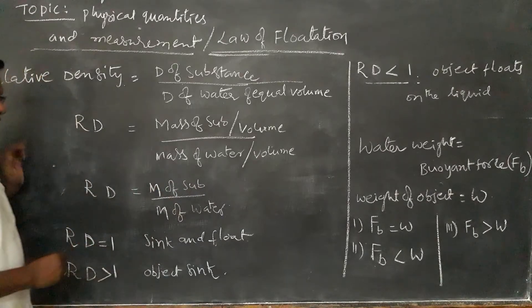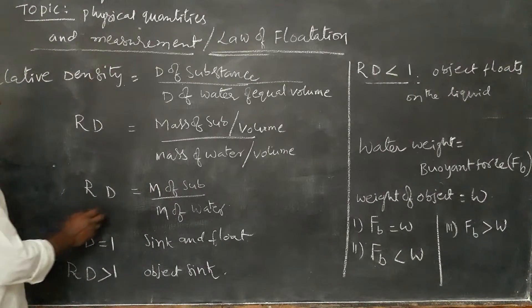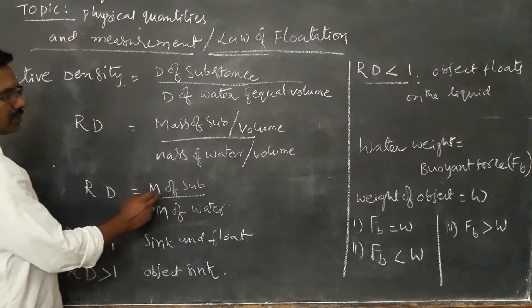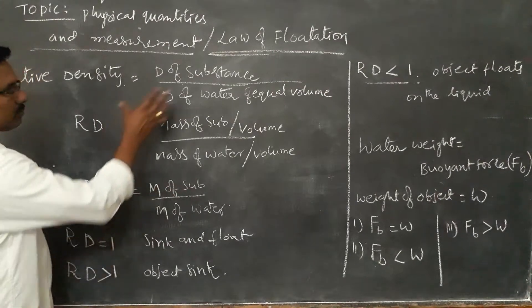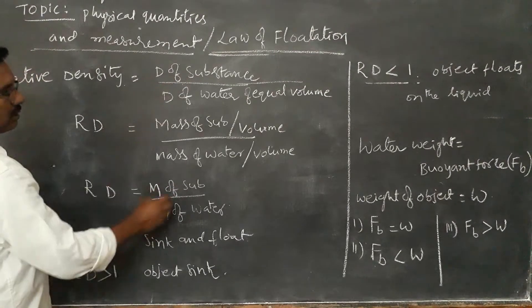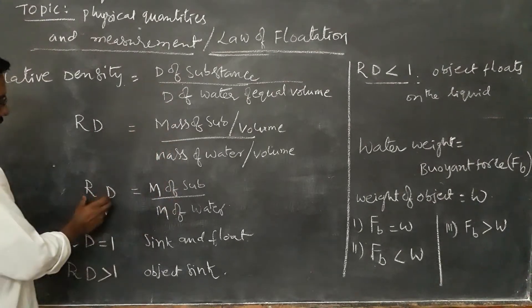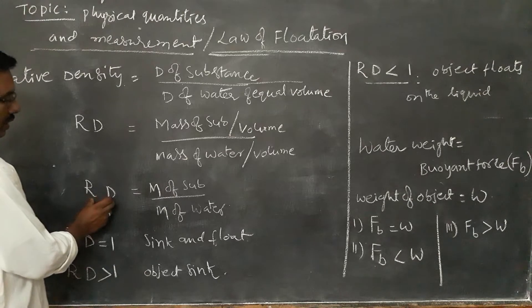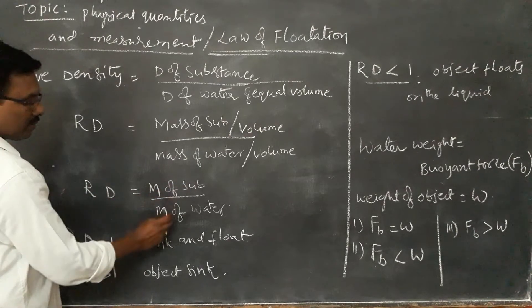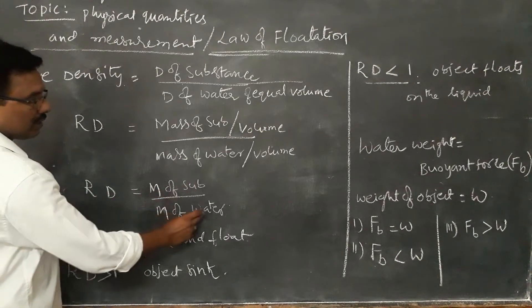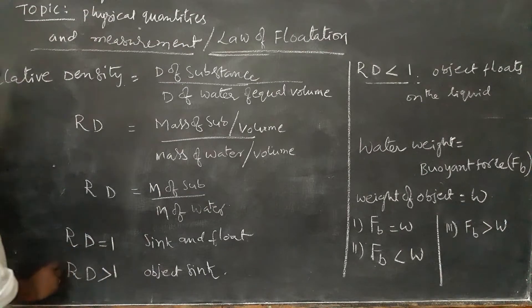After cancelling the denominators, what remains is mass of the substance divided by mass of the water. This gives us the formula for relative density: relative density is equal to mass of the substance divided by mass of the water.